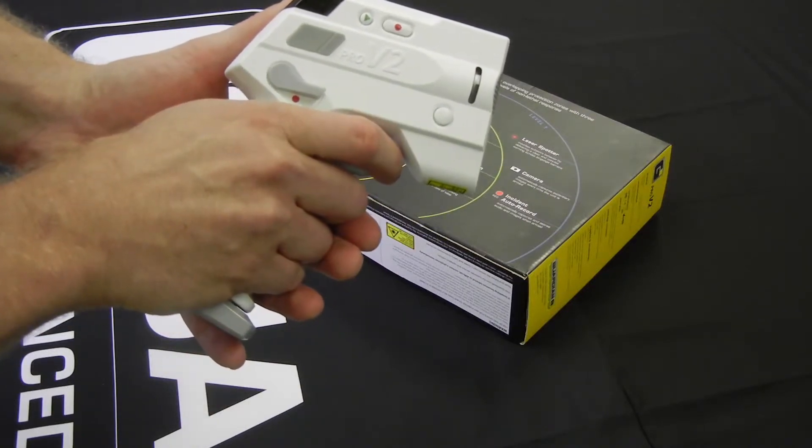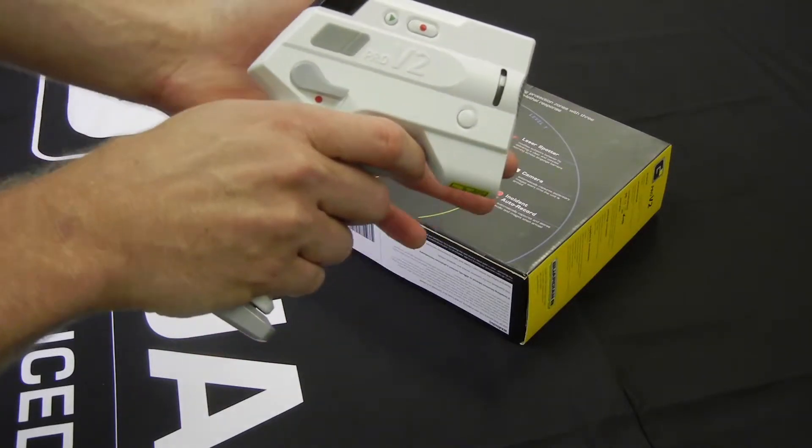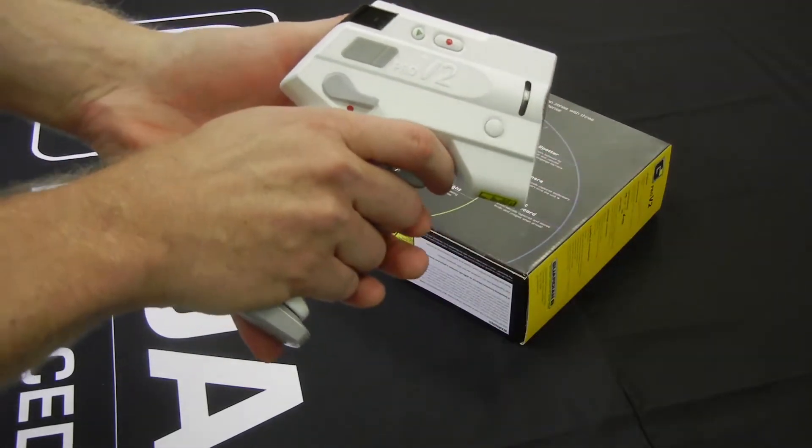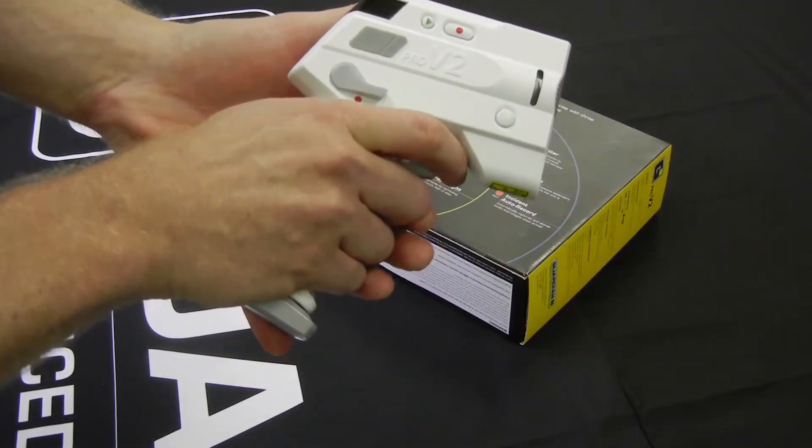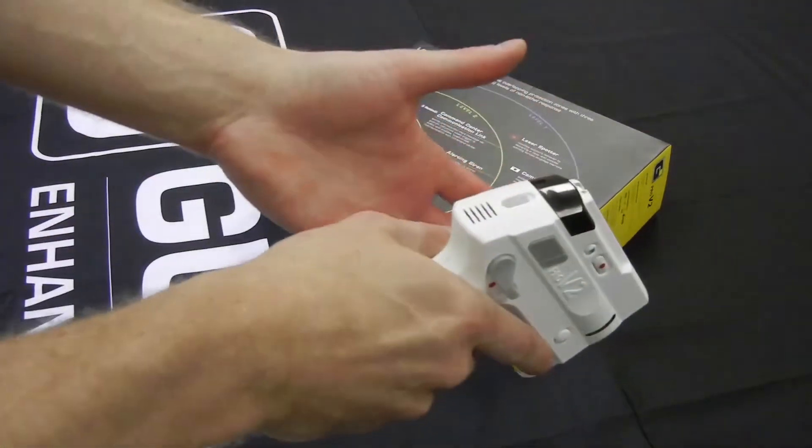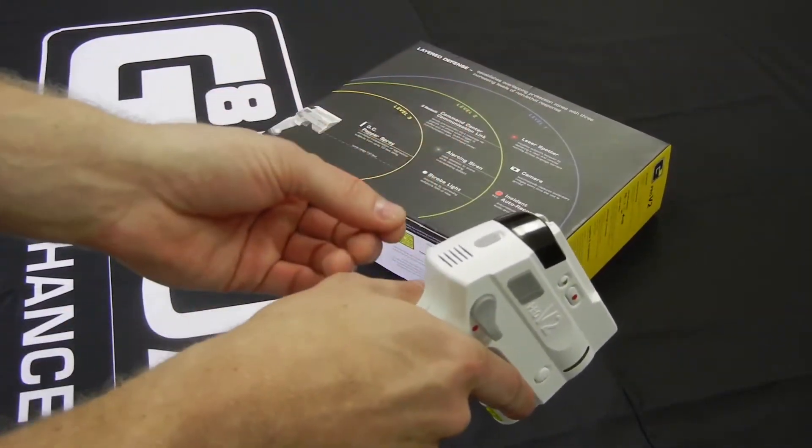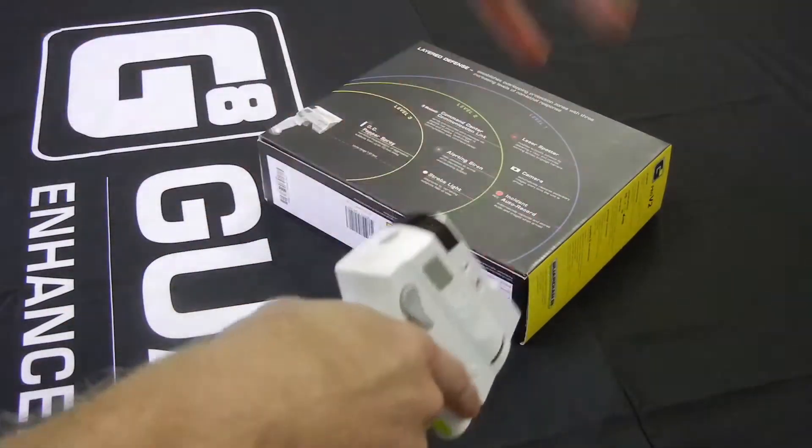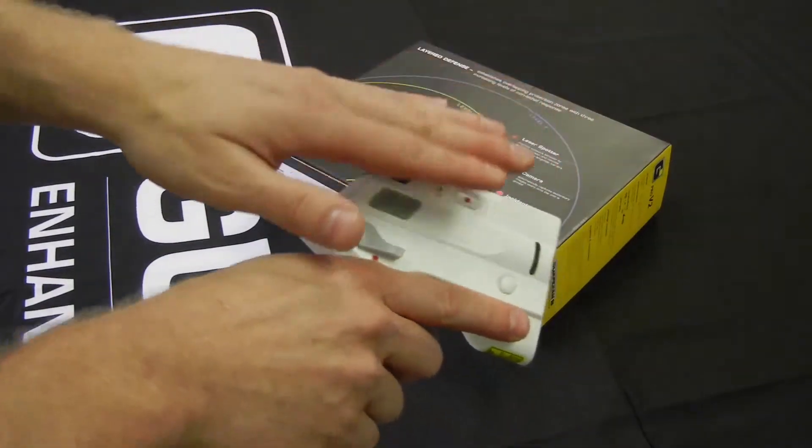You can see that the OC still comes out. Now remember I have a practice canister so this isn't live OC. But that's an added safety feature for the user in case you deploy this device but forget to have it powered on. Now if I had it powered on, I'd have all the lights and the sounds. But in this case, with no power, it's not recording.